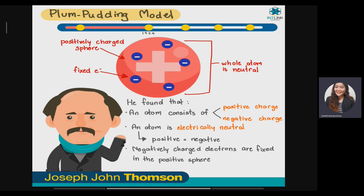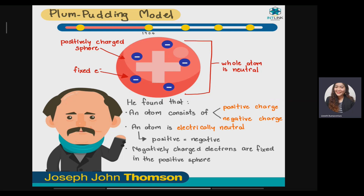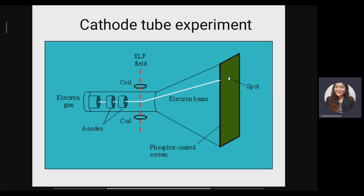Joseph John Thompson introduced the plum pudding model. According to him, the whole atom is neutral because the atom itself is a positively charged sphere while the negatively charged electrons are embedded or scattered within it. From his cathode ray experiment, an atom consisting of positive and negative charges makes the atom electrically neutral because the positive and negative charges are equal. He also found that the negatively charged electrons are fixed within the positive sphere.